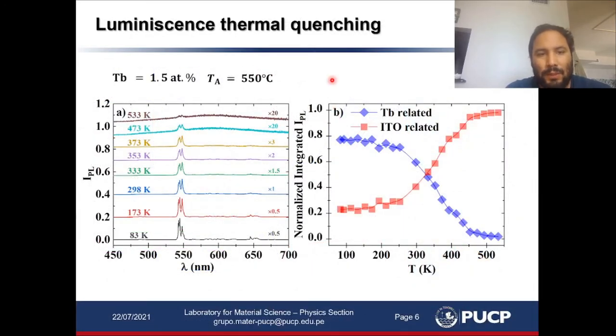In order to probe the potential excitation mechanisms between the host and the terbium ions, we performed temperature-dependent photoluminescence measurements on a sample grown with 1.5 atomic percent of terbium and annealed at 550 degrees Celsius. Here I'm showing you the emission intensity versus wavelength for different sample temperatures, and on the right, I'm showing you the integrated emission intensity associated to terbium and associated to the host. We see that when we increase the sample temperature, we lose terbium emission and enhance the host emission.